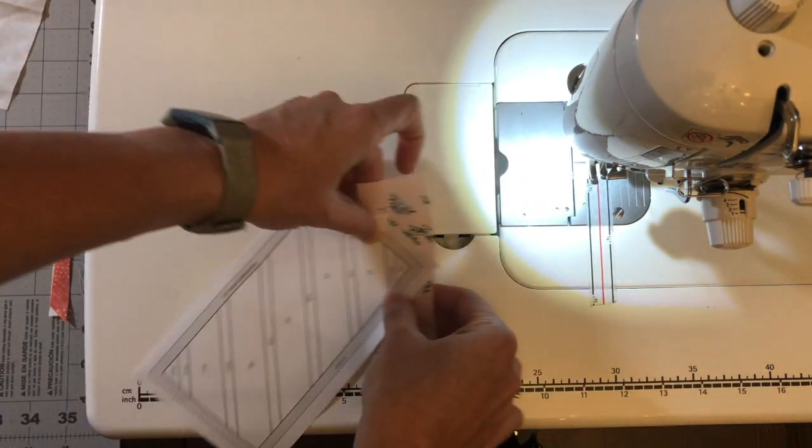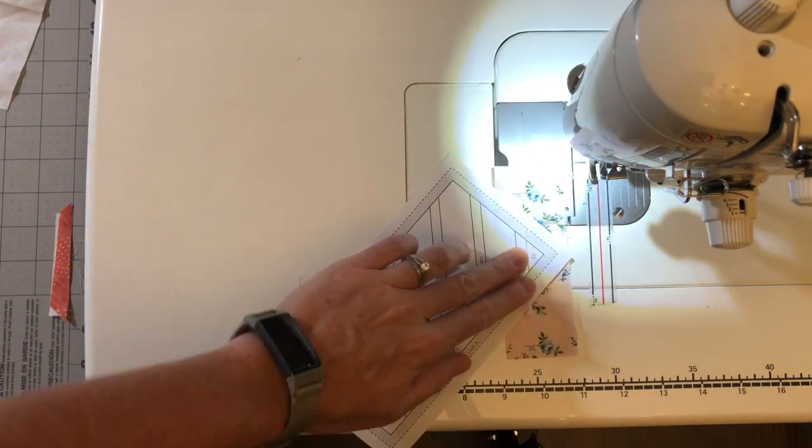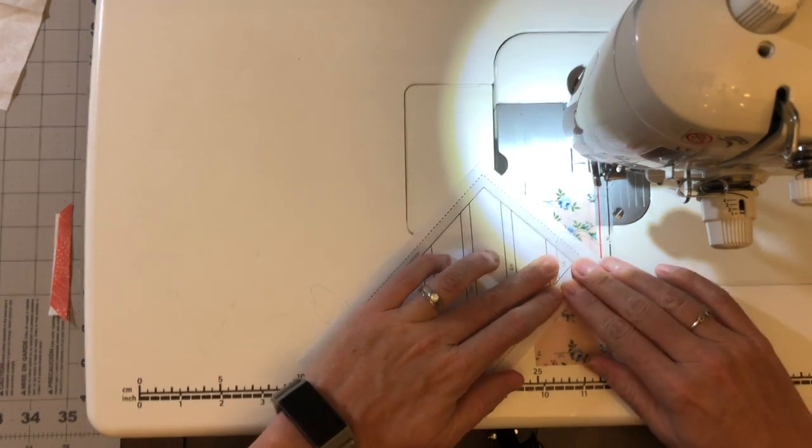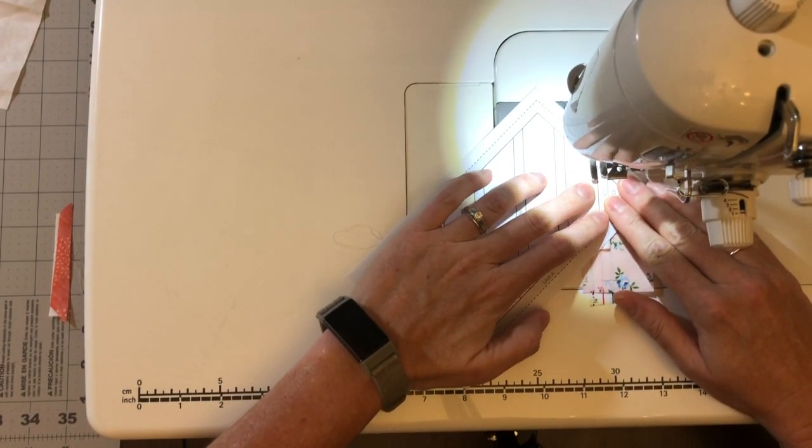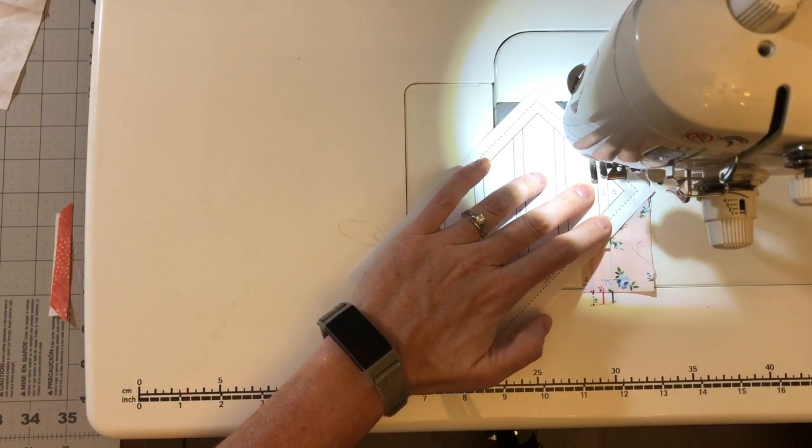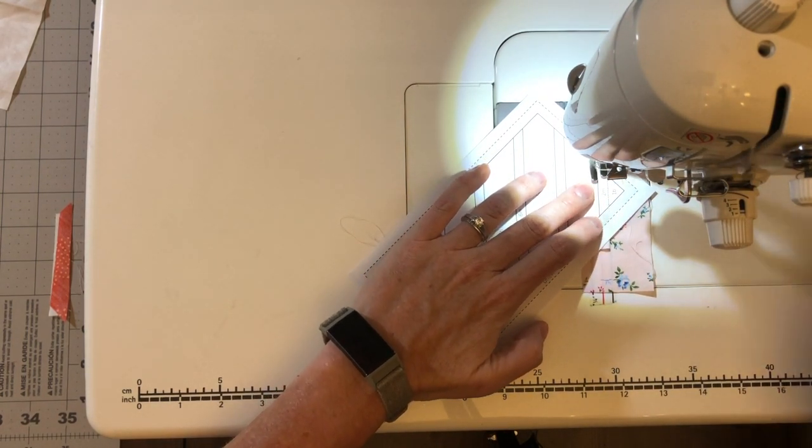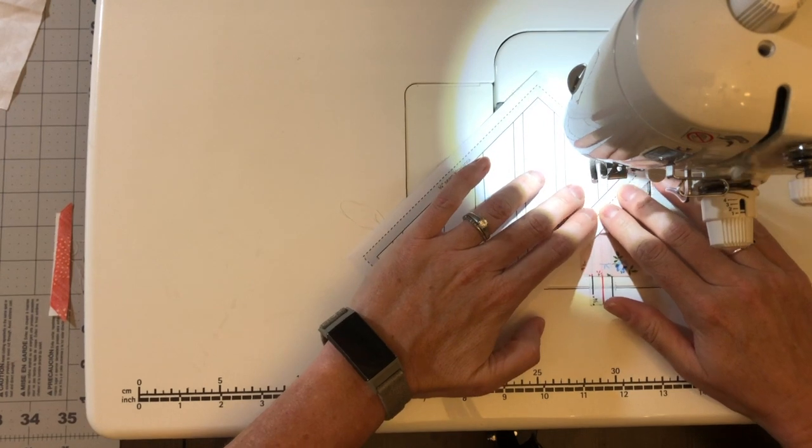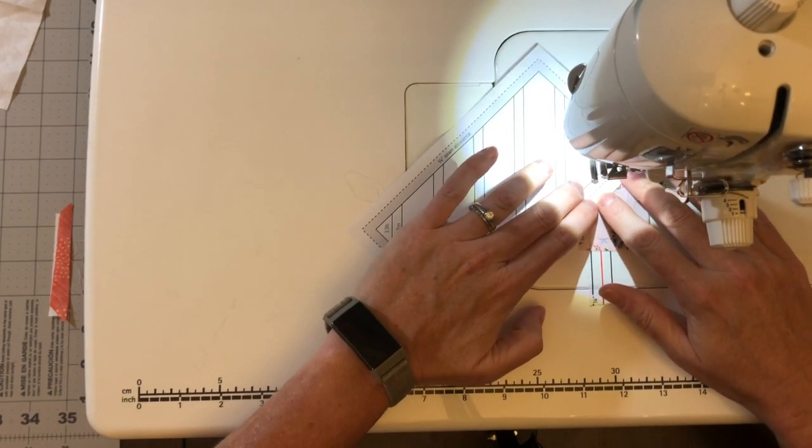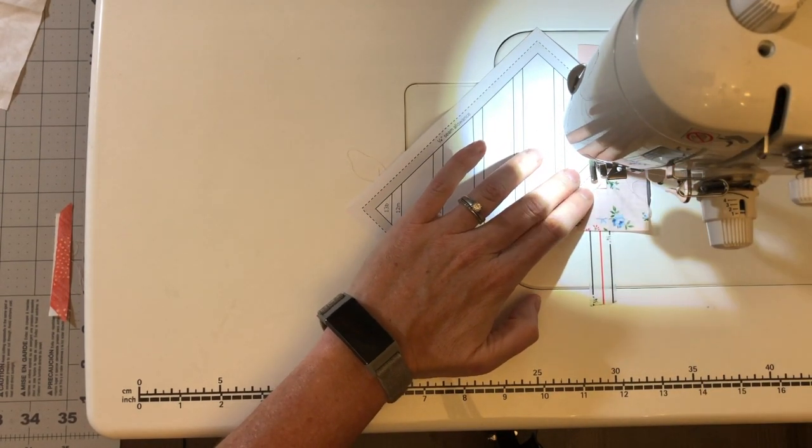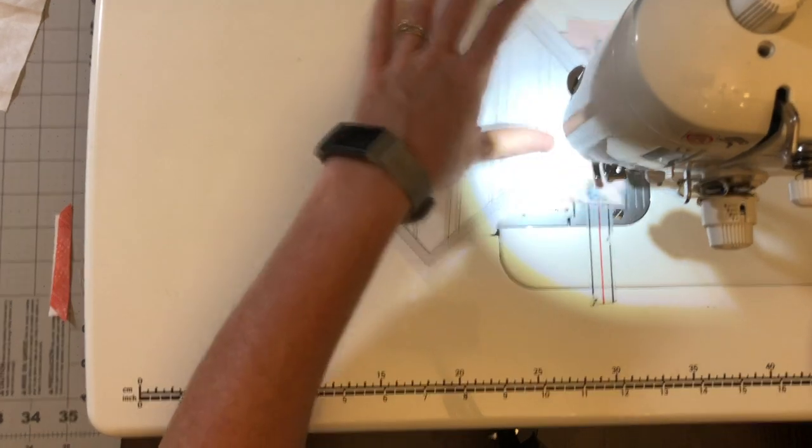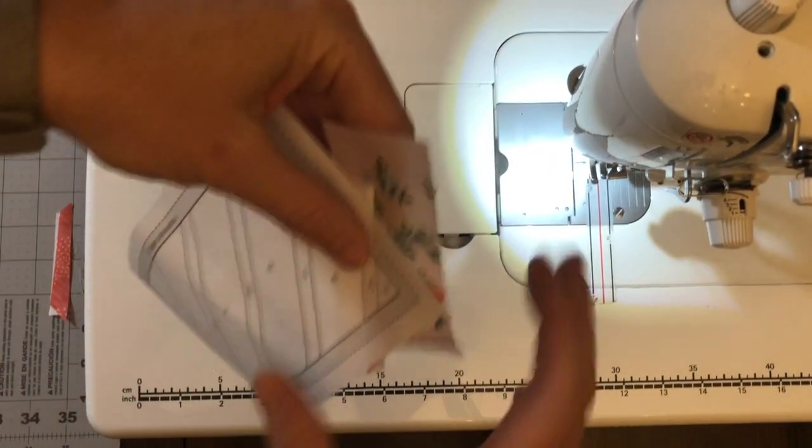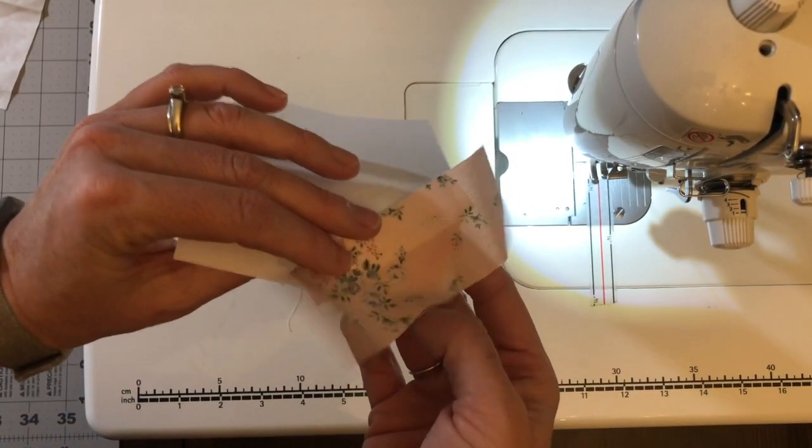I have these pieces here. Again, I'm going to go over to my sewing machine, line it up, start just a couple stitches ahead of the line, backstitch, sew right along that line again, go a little bit past the edge, backstitch, and I'm done. So now I have my third piece in place. And you can see how this block is going to build.